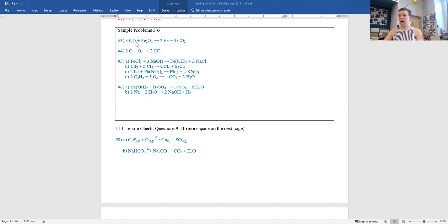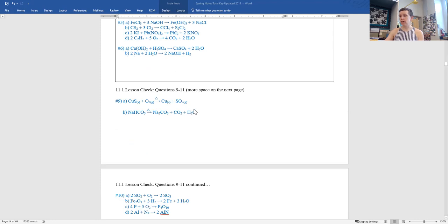For three through six, I'll give you a second to look at these. Three: carbon monoxide plus Fe2O3 gives you two Fe plus three CO2. Number four: two carbons plus O2 gives you two CO2. Number five: a is FeCl3 plus three NaOH gives you Fe(OH)3 plus three NaCl. B: CS2 plus three Cl2 gives you CCl4 plus S2Cl2. C is 2KI plus Pb(NO3)2 gives you PbI2 plus 2KNO3. And D: 2C2H2 plus 5O2 gives you 4CO2 and 2H2O. Number six: Ca(OH)2 plus H2SO4 gives you CaSO4 plus 2H2O. And B is 2Na plus 2H2O gives you 2NaOH plus H2. All the sample problem answers are in the back of your book. So make sure that if I went too fast there, you can look those up.